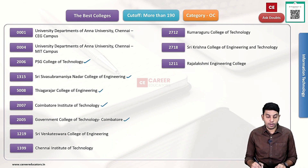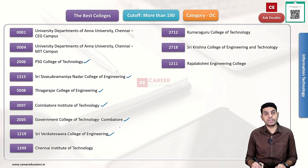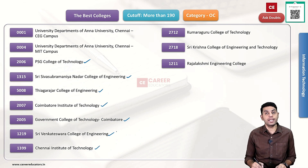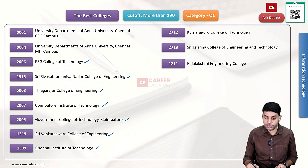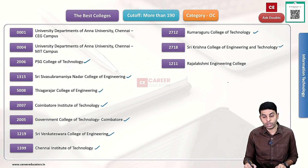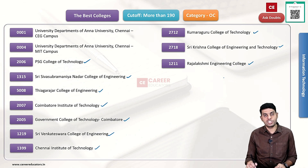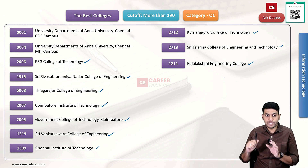2005 Government College of Technology, Koyamathur. 1219 Sri Venkateshwara College of Engineering. Chennai Institute of Technology. 2712 Kumarakuru College of Technology. 2718 Sri Krishna College of Engineering and Technology. 1211 Raji Lakshmi Engineering College.